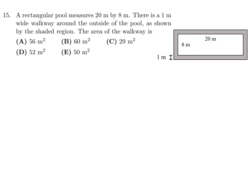A rectangular pool measures 20 by 8, and there is a 1-meter wide walkway around the outside. The pool is 8 wide, and adding 1 on each side makes the short sides 10 by 1, each with area 10. The long sides are 20 by 1, each with area 20. Total walkway area is 20 plus 20 plus 10 plus 10, which is 60. So the answer to number 15 is B.